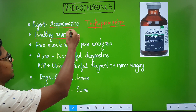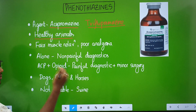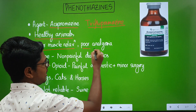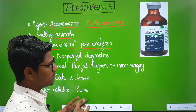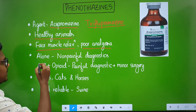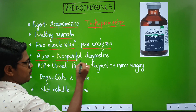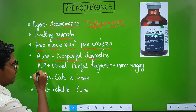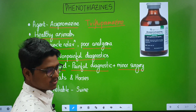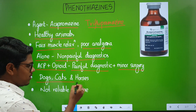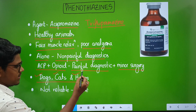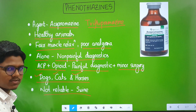Acepromazine has fair muscle relaxation and poor analgesia, so it should be used in a multi-drug approach when used for anesthesia. It can be used alone for non-painful diagnostic procedures, or combined with an opioid for painful diagnostics and minor surgeries. It is a reliable pre-anesthetic and sedative for dogs, cats, and horses, but is not reliable in swine — for swine, butyrophenones are used.